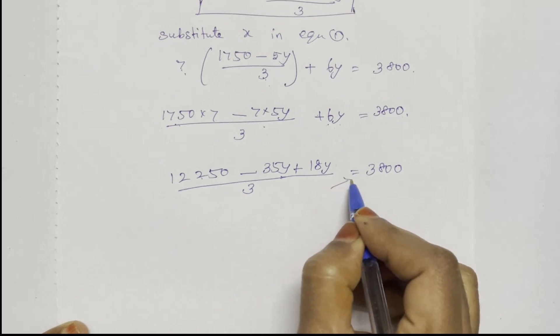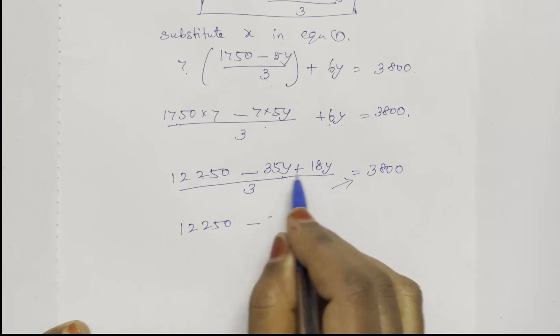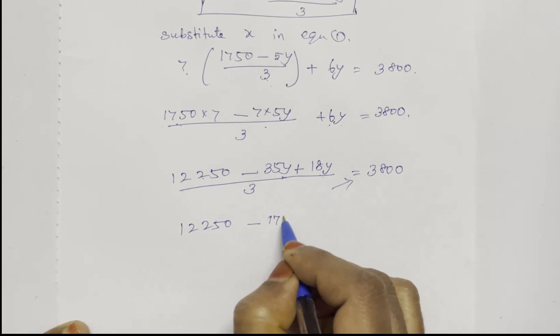Now do cross multiplication. Subtract to get 17Y.